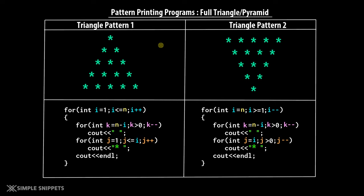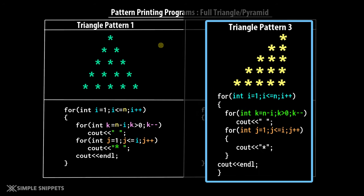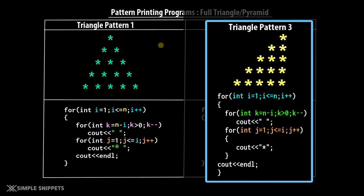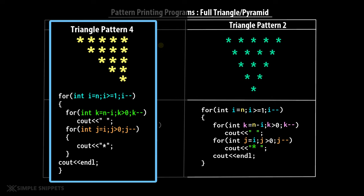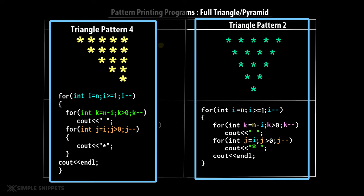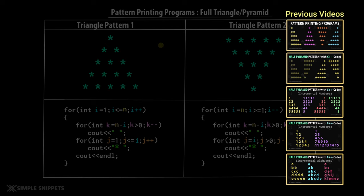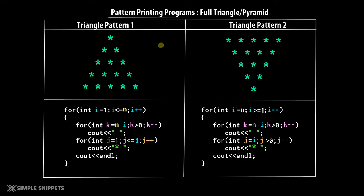If you've seen the previous pattern printing tutorials, remember there was a half pyramid pattern. The only difference between that and pattern one is you simply have to add spaces between the symbols. Similarly, we had another pattern — again you just add spaces to get pattern one and pattern two respectively. This code is in C++ but it will also work in Java or any other general purpose programming language, with only the syntax changing. The logic is going to be the same.